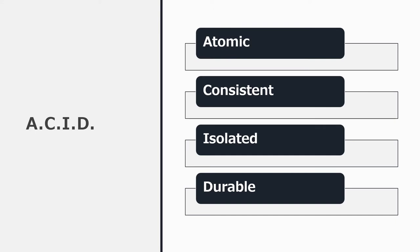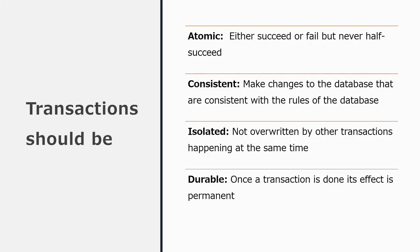Each transaction should be Atomic, Consistent, Isolated, and Durable. Transactions should be atomic — that means they can't be split. They're either true or false; a transaction either has succeeded or it has failed. You can't have a half-completed transaction. If you get halfway through a transaction and your internet connection crashes, then the whole transaction is written off.